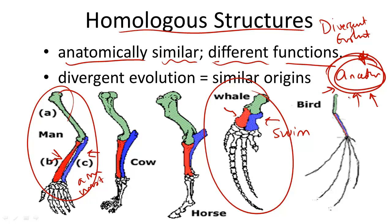And one way to differentiate homologous structures from analogous structures is you need to remember that the prefix homo means the same. And what is the same about them? They have the same structure and shape or anatomy.